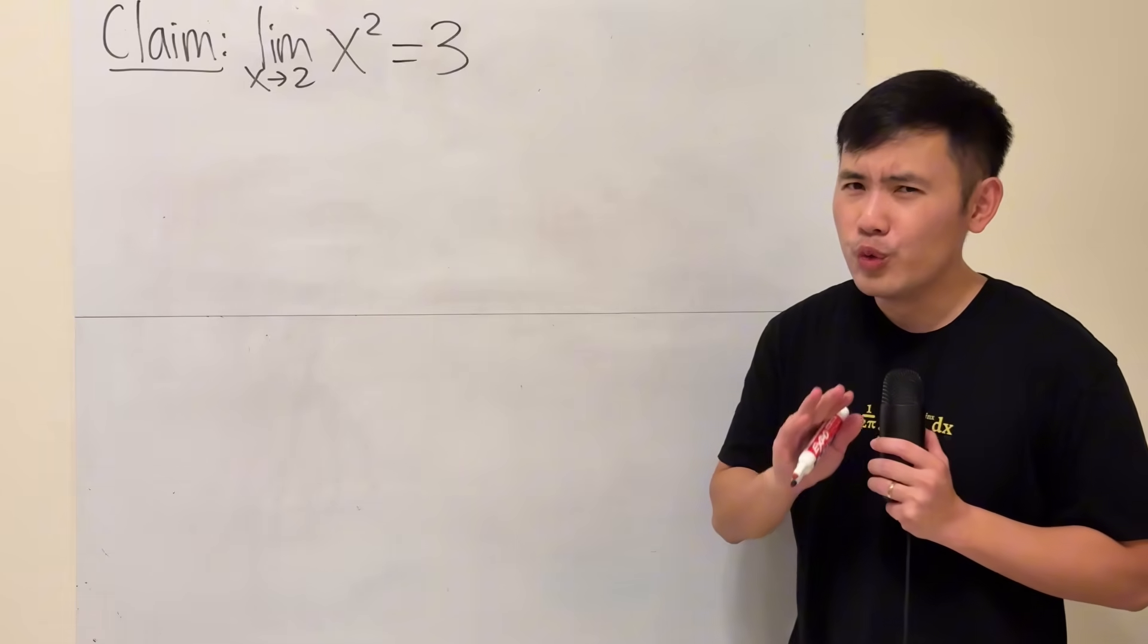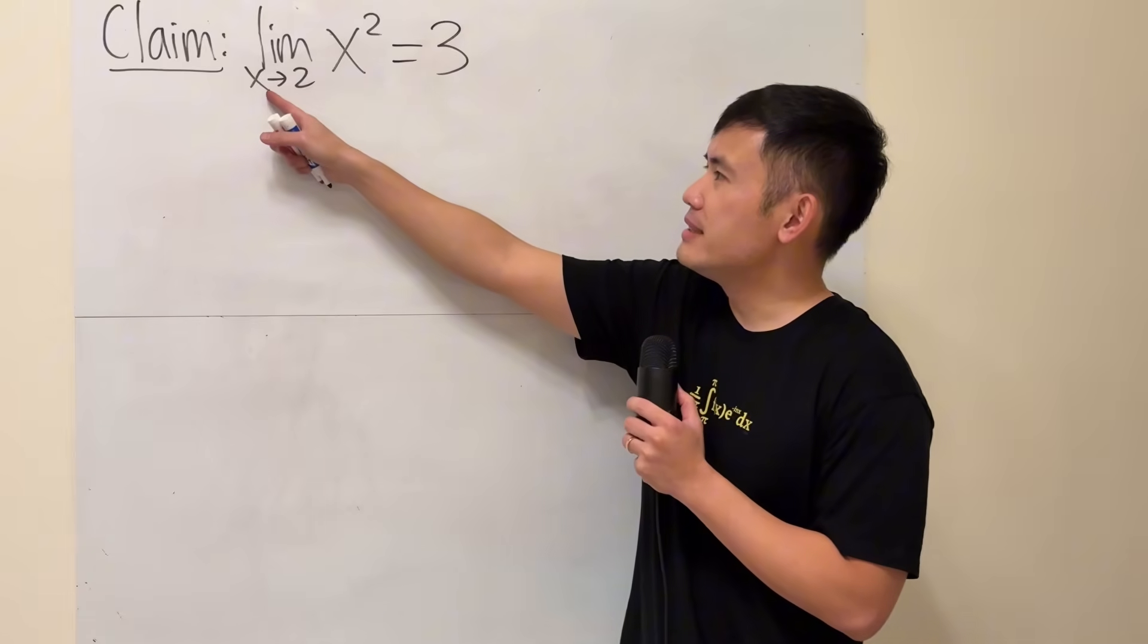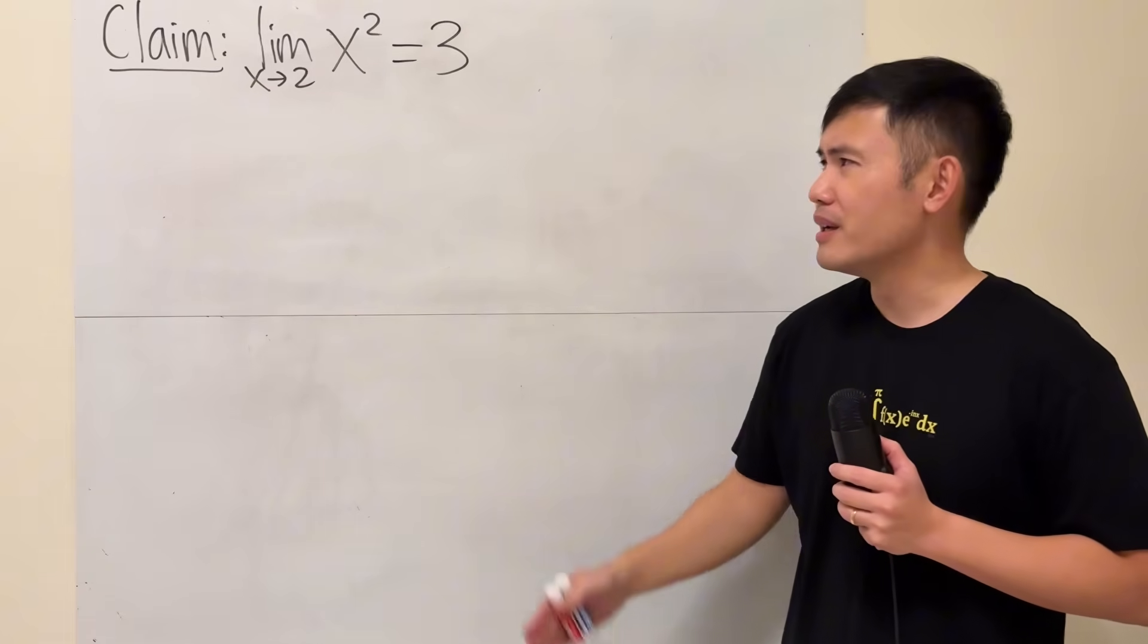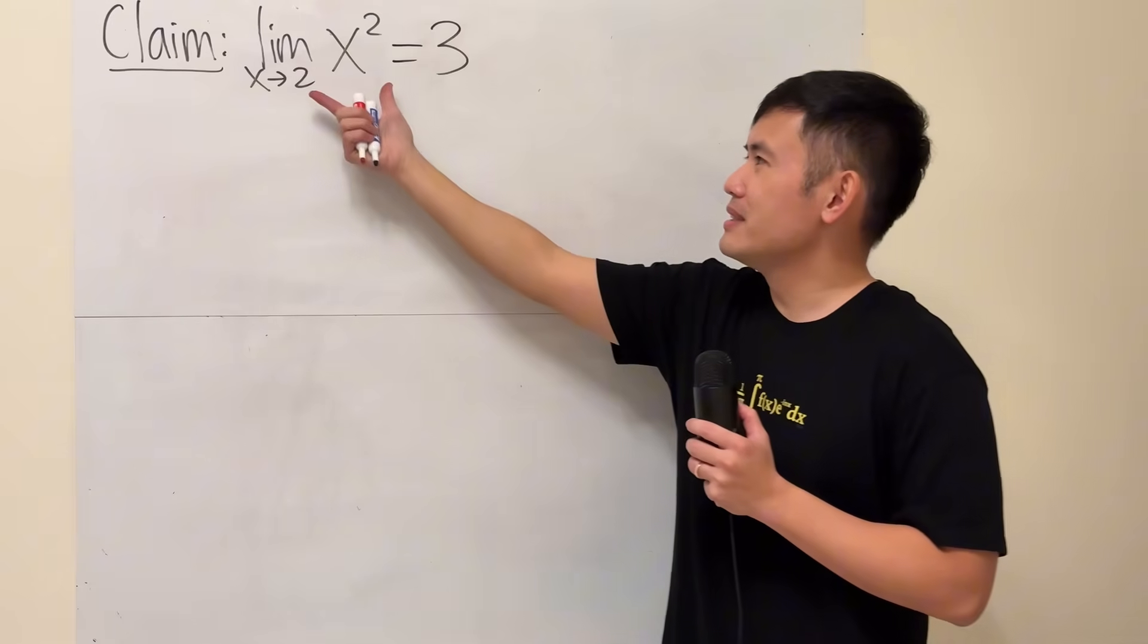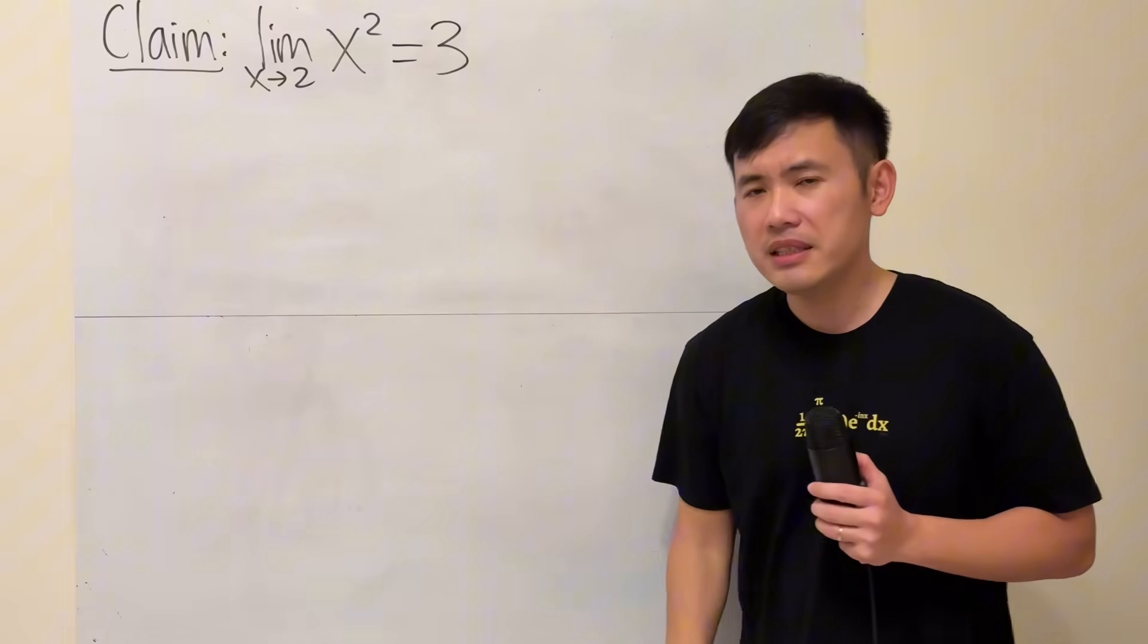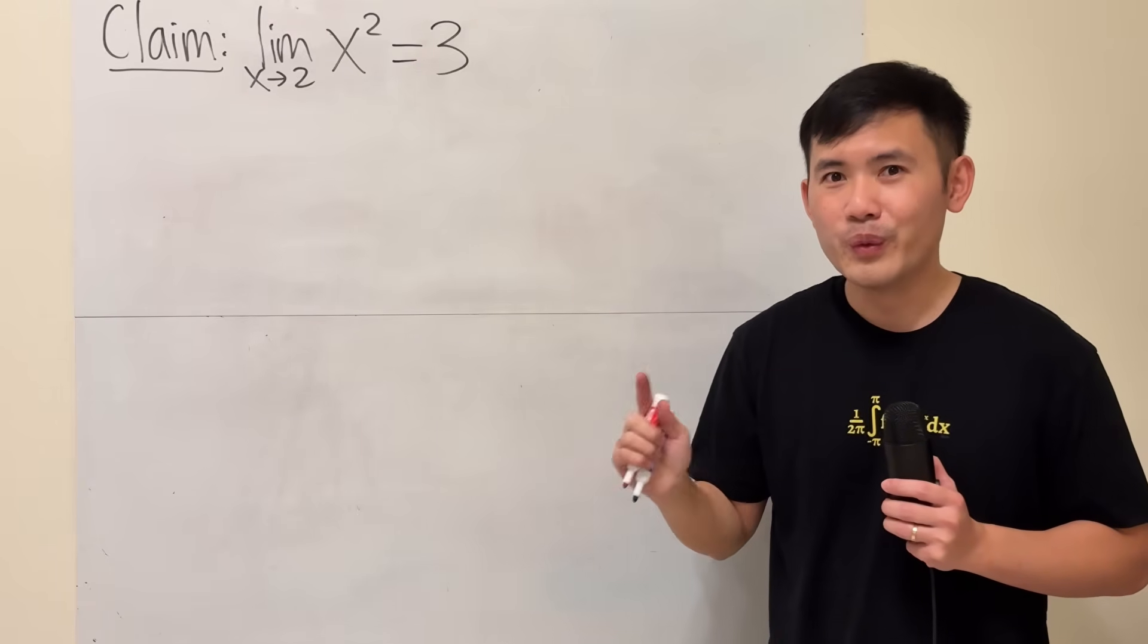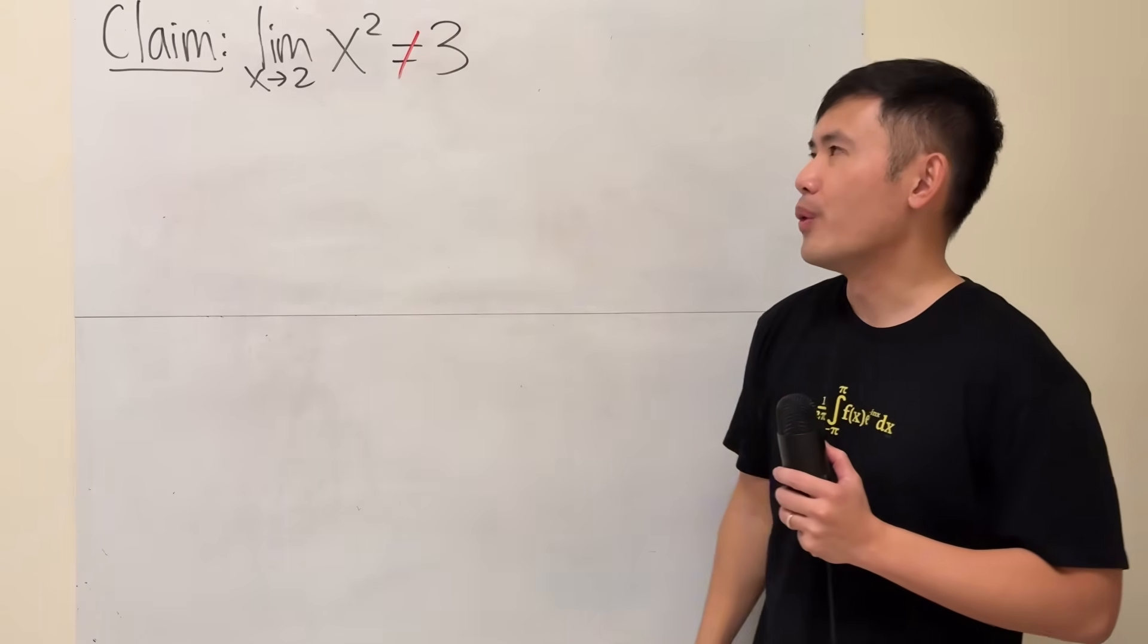Today, let's do something that normal people wouldn't do, and that is to show that the limit as x approaching 2 of x squared is equal to 3. And you might be wondering, this is wrong, isn't it? You are correct, because the actual answer for this limit is 4, not 3. So today, we are going to show that this limit is not equal to 3.